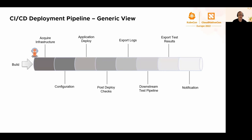If we look at a typical deployment pipeline — a very generic view — you typically would have a build coming in on the left-hand side. The first stage would typically be the acquisition of infrastructure onto which you would run your deployments. The second stage would typically be some kind of configuration you might want to do on that infrastructure. So in terms of a Kubernetes cluster, for example, you might want to set up some storage or some prerequisites before you do your application deployment. Application deployment then — you would deploy your software components onto that infrastructure. You may want to do some post-deploy checks, export deployment logs, trigger downstream test pipelines, export those test pipeline results to some location that could be downloaded by individuals at a later point, and then finally do some notification out to the wider teams that your deployments have completed.